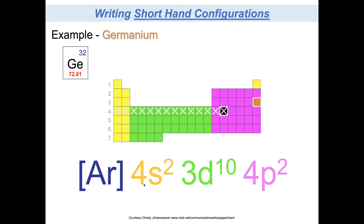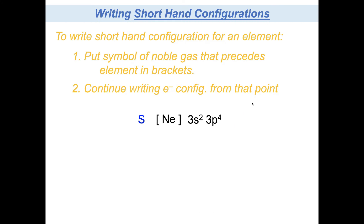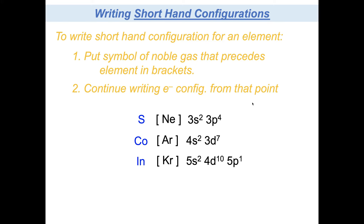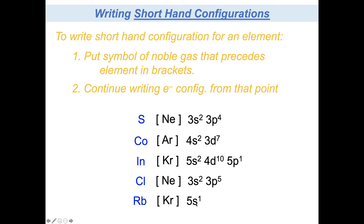We will ask you to do shorthand configurations a lot because it's much quicker. You'll get so used to writing 1s2, 2s2, 2p6, and all of that — it's nice to shorthand it with the noble gas in brackets. It has to be one of the noble gases, and it has to be the one that comes directly before the element. For example, for rubidium, you'd expect krypton to be right before it, and then rubidium is 5s1 — short and simple.